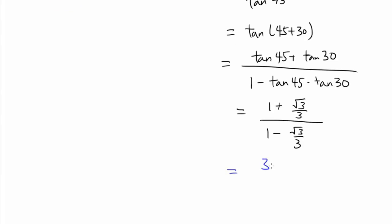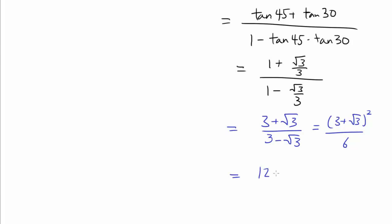And multiplying top and bottom by 3, and then rationalizing the entire thing, that's going to be (3 plus square root of 3) squared over (9 minus 3) or 6. And this is (12 plus 6 square root of 3) over 6 or 2 plus square root of 3.